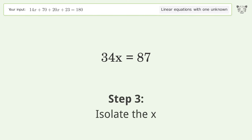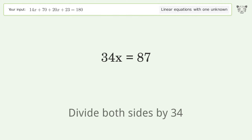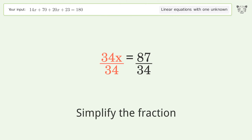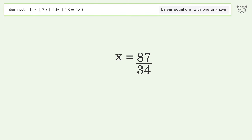Isolate the x: divide both sides by 34, then simplify the fraction. And so the final result is x equals 87 over 34.